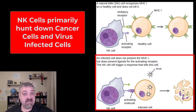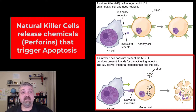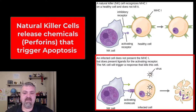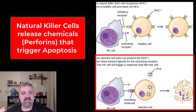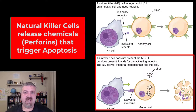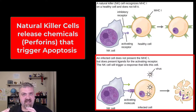It just knows that there is something wrong with this cell. When it bumps into an infected cell — like here you see an example of a virus-infected cell — it is going to use chemicals like perforins that are going to direct this cell to kill itself. Remember, that's called apoptosis. So the job of the natural killer cell is to ask these cells to kill themselves.